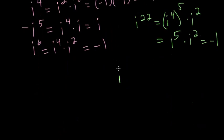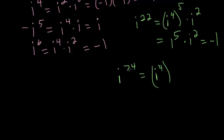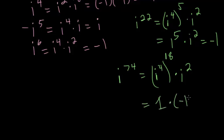One final example: i to the 74th power. How many whole times does four go into 74? It goes into 72 evenly, with 2 left over. So four times 18 is 72, with a remainder of 2. This gives us 1 times i squared, which is negative 1. So i to the 74th is minus 1.